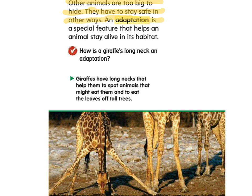An adaptation is a special feature that helps an animal stay alive in its habitat. Remember, a habitat is a specific place where a certain type of animal lives. How is a giraffe's long neck an adaptation? Giraffes have long necks that help them spot animals that might eat them and to eat the leaves off tall trees. So their long necks help them see far in the distance and get the food they need.